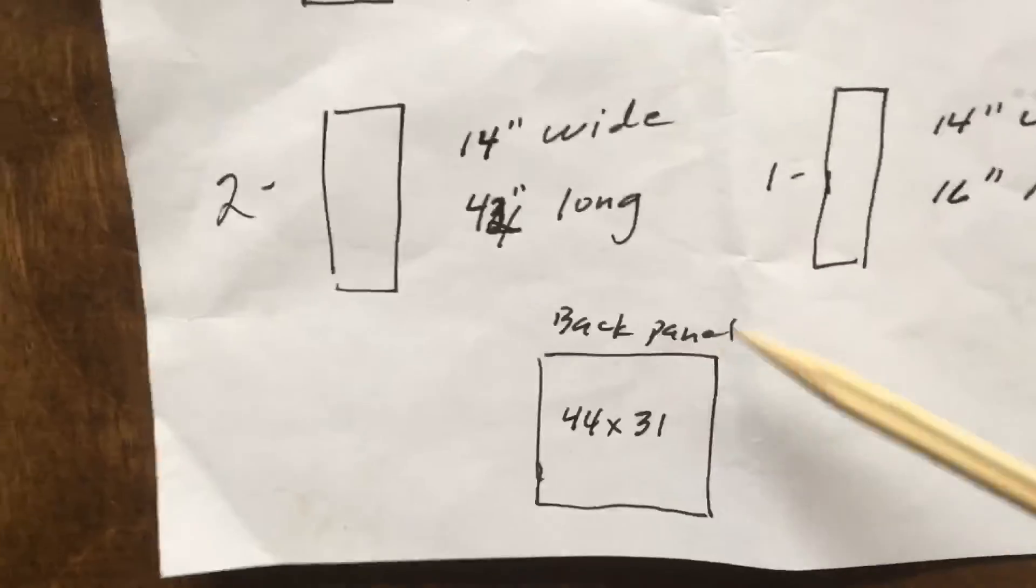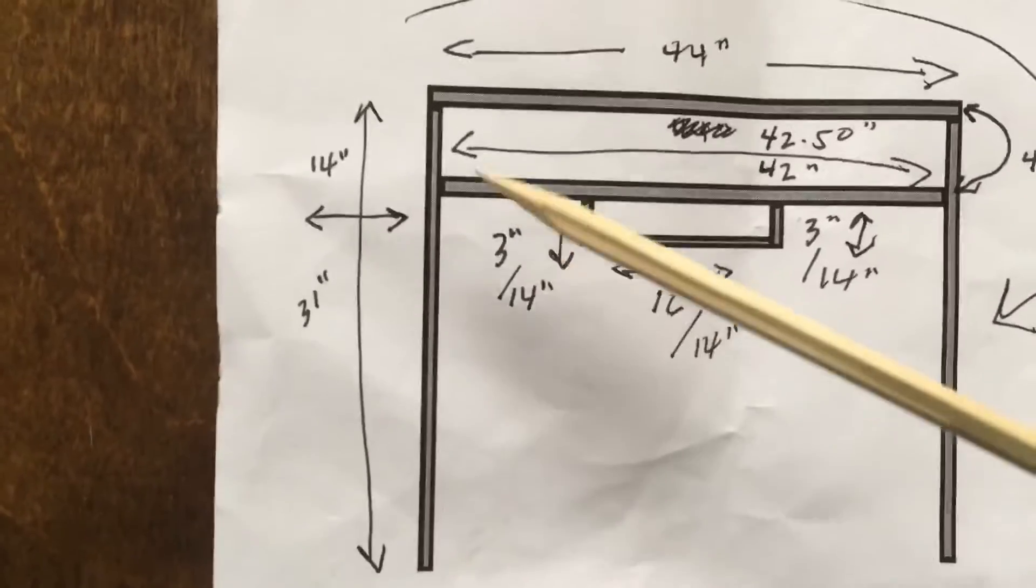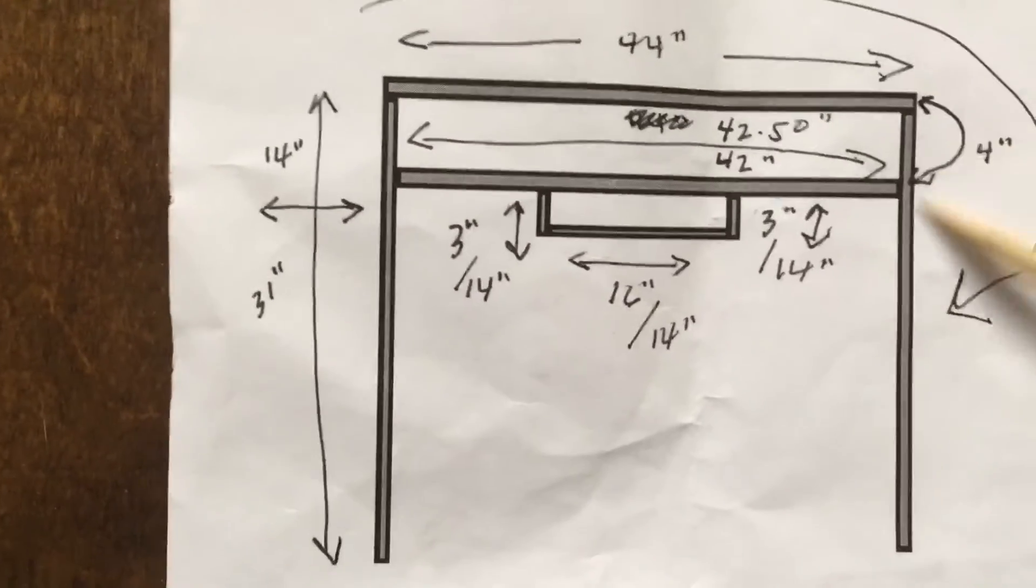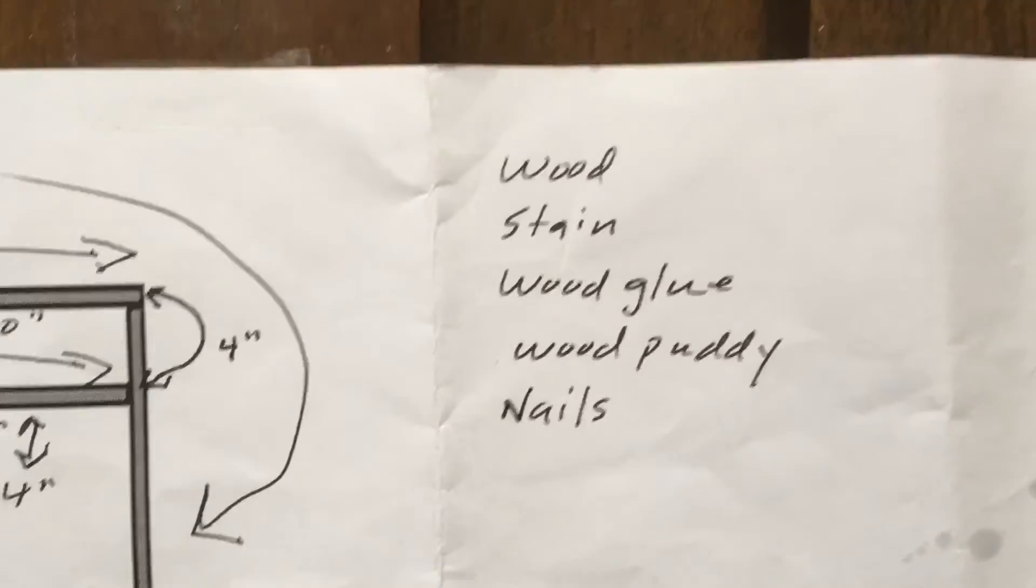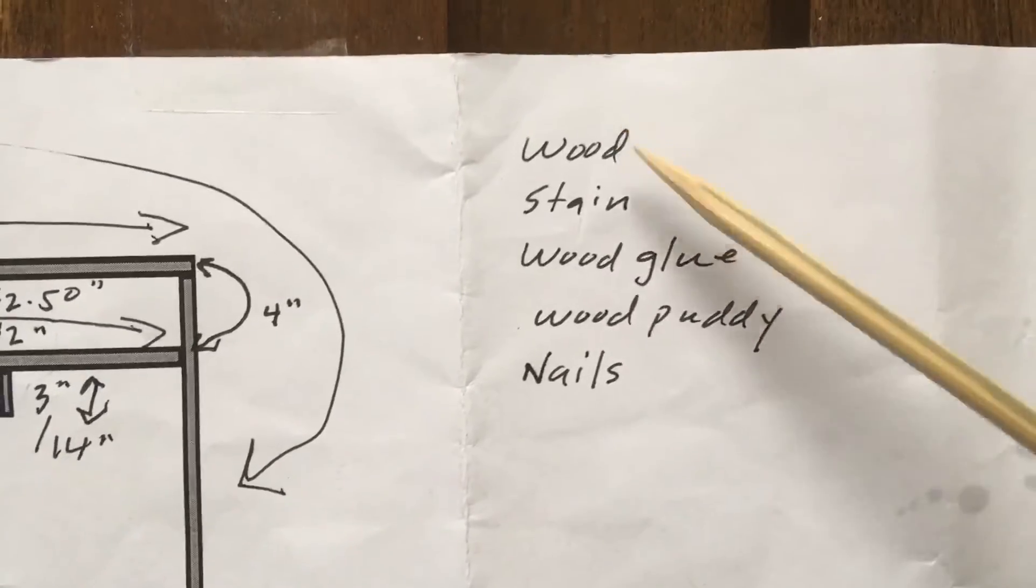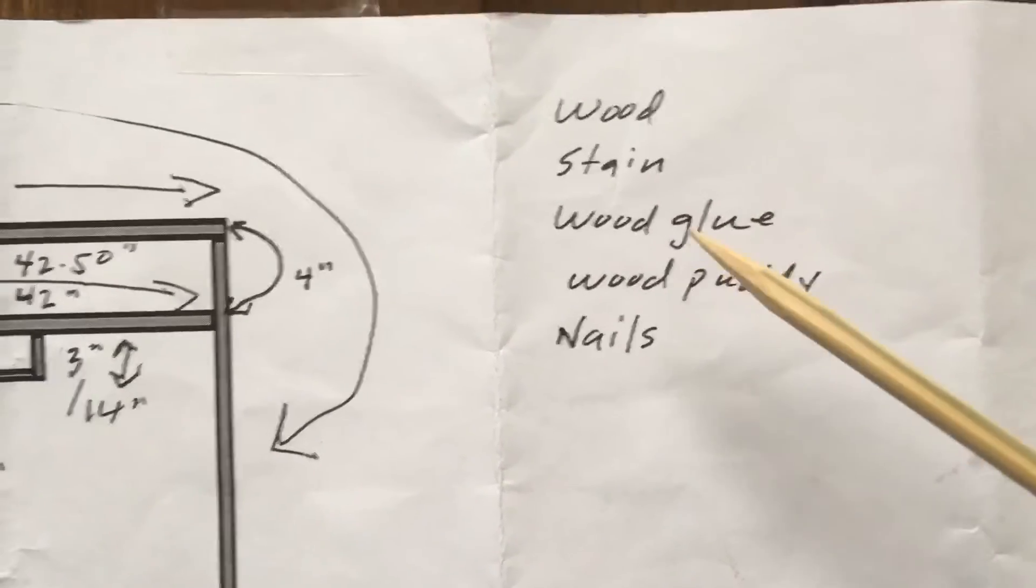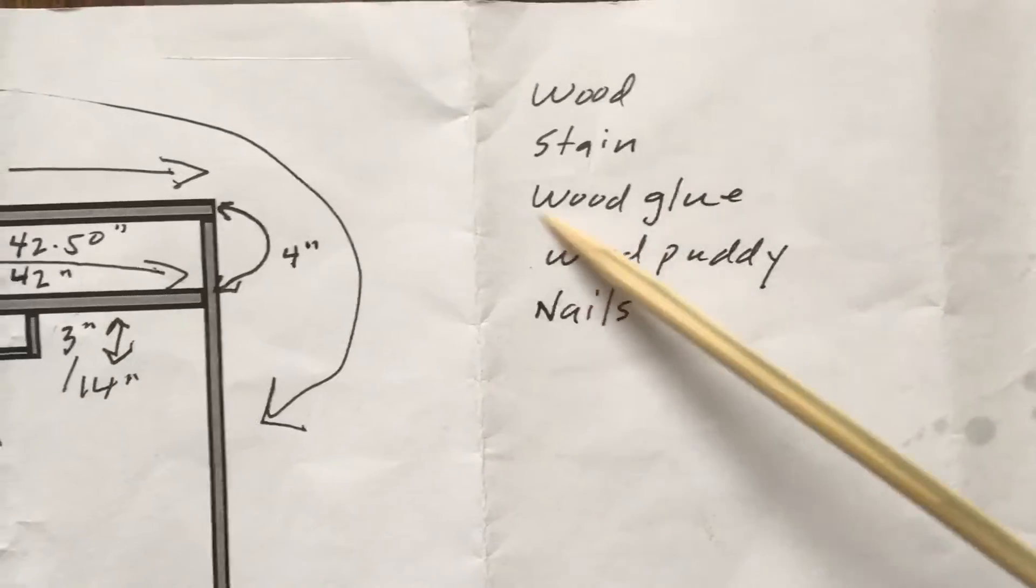That's going to go on the back of this and help give it some structure. Over here, I got my little shopping list: wood stain, wood glue—well, I already had wood glue so you can strike that—wood putty, and nails.